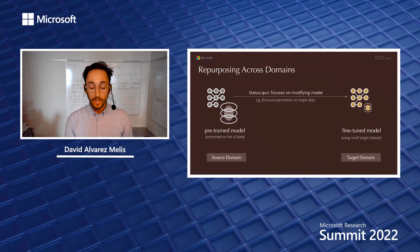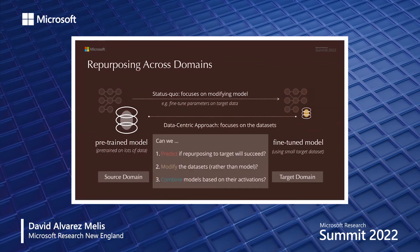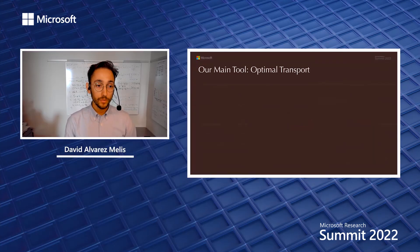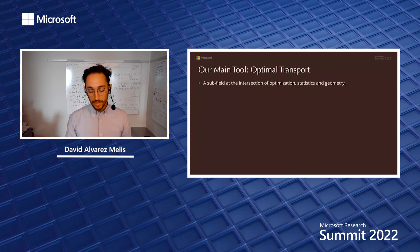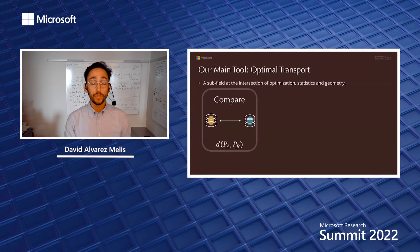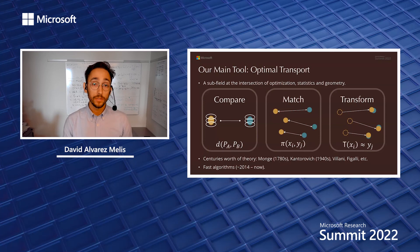In contrast to this status quo approach, here we take a data-centric approach to repurposing — focusing on the datasets across which we're trying to repurpose — to answer questions like: can we predict if repurposing will succeed across a pair of tasks? Can we modify datasets rather than the models? And can we combine models based on their distributional activations? To answer all of these questions, we'll rely on one main tool: optimal transport. Optimal transport is a mathematical gem at the intersection of optimization, statistics, and geometry — a very powerful and flexible tool that intertwines comparison, matching, and transformation of datasets, with a century's worth of theory and staggering progress in algorithm efficiency over the past decade.